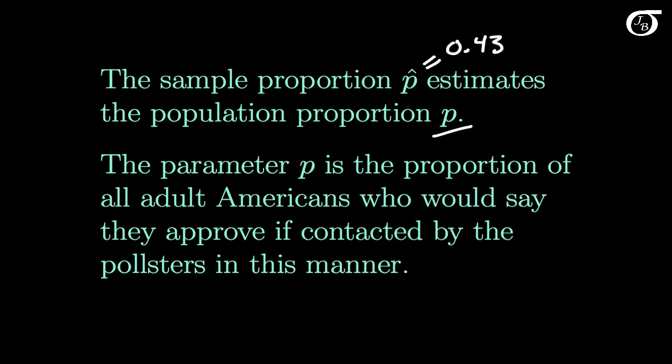Here the parameter p is the proportion of all adult Americans who would say they approve if contacted by the pollsters in this manner. It is an unknown quantity, and we are trying to estimate it. An important question for us is how close is the statistic p-hat likely to be to the parameter p? The sample proportion p-hat of 0.43 estimates the population proportion p. But p is an unknown quantity. So is it still conceivable that p is 0.92 or 0.04 or 0.56? What are the likely values of p?